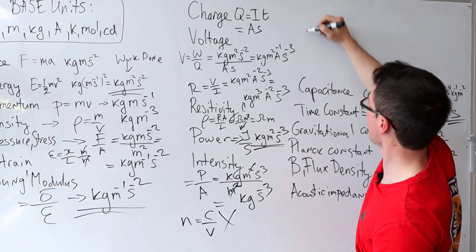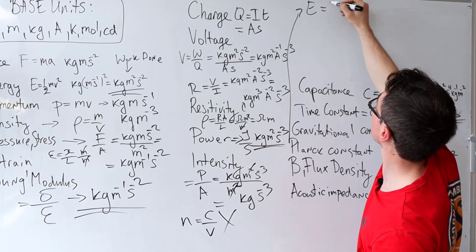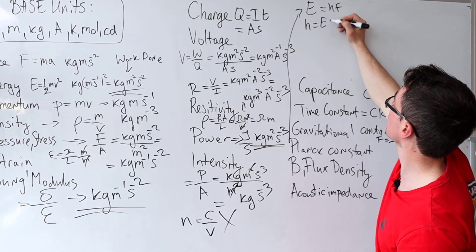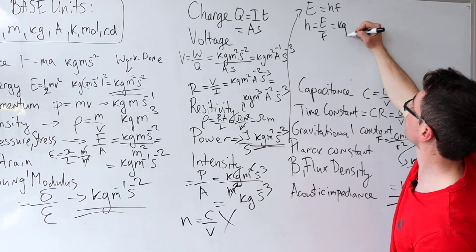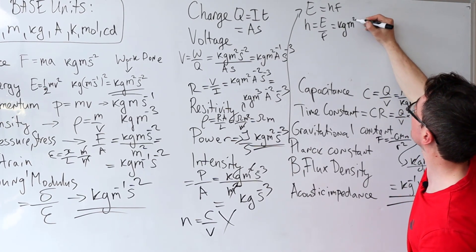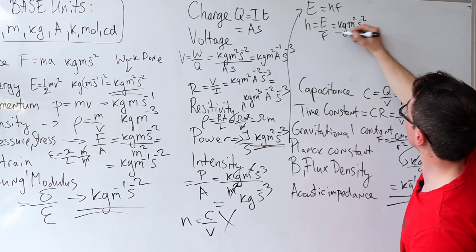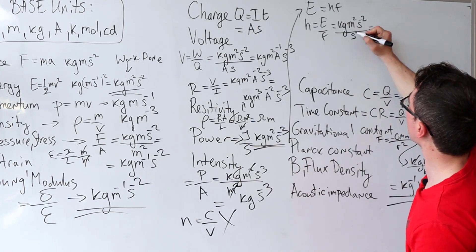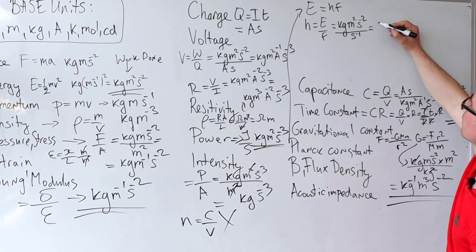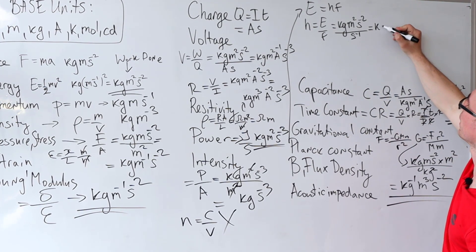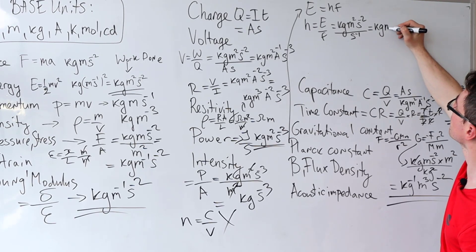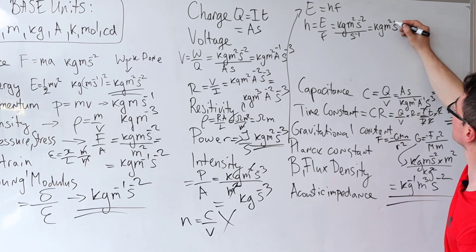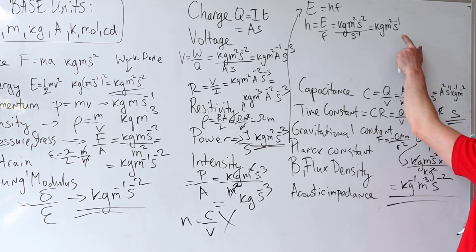Planck's constant — using E equals hf, h is E divided by frequency. Energy is kg m² s⁻², divided by frequency which is s⁻¹. So h is kg m² s⁻² divided by s⁻¹, giving kg m² s to the power of minus one.